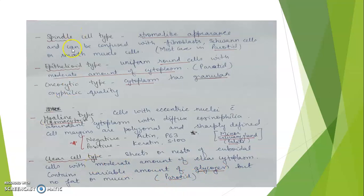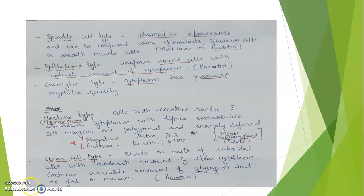In summary: spindle cell type, epithelioid type, oncocytic type, and clear cell type are all common in parotid glands. The hyaline type or plasmacytoid type is seen in minor salivary glands and is negative for actin and P63.